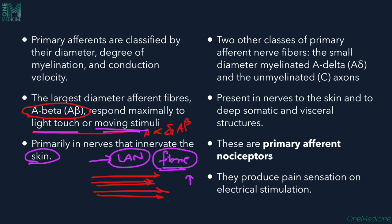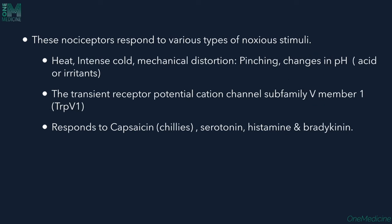The two other classes — small diameter myelinated A-delta fibers and unmyelinated C axons — are responsible for pain transmission and are present in nerves to the skin and to deep somatic and visceral structures. These are called primary afferent nociceptors, and they produce pain sensation on electrical stimulation.